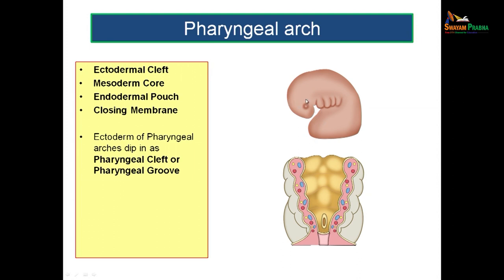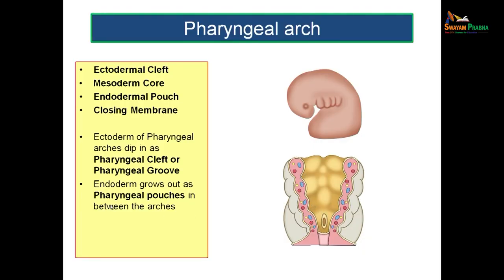You have a set of ectodermal clefts on the outer aspect and endodermal pouches on the inner aspect, and in between you have the mesodermal core. This is a cut section — you are standing inside the primitive pharynx looking at the floor. What do you mean by closing membrane? The ectodermal cleft is here, the endodermal pouch is here, and the point where these two meet is known as the closing membrane. The closing membrane is the region lying between the ectodermal cleft on one side and the endodermal pouch on the other side.